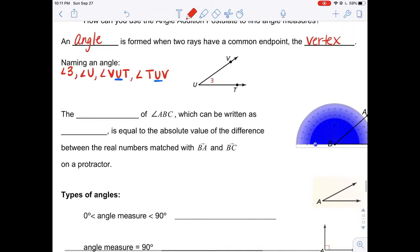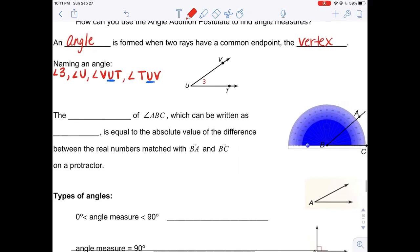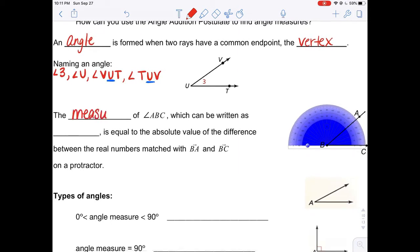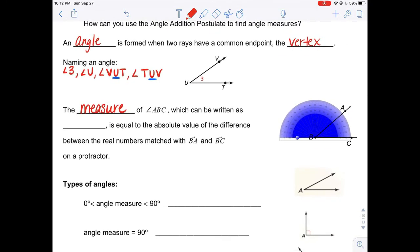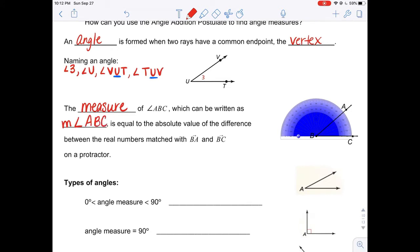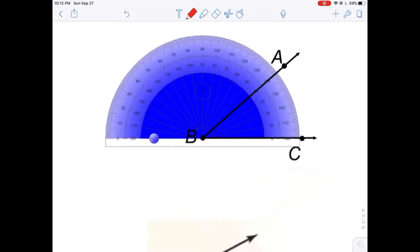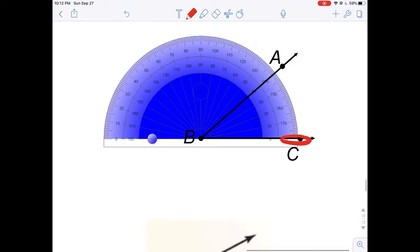We can find the measure of angles. Here you see a picture of our protractor. We can find the measure of angle ABC, which can be written as: when we want to find the measure of an angle, the measure of the angle—in this example it's ABC—is equal to the absolute value of the difference between the real numbers matched with ray BA and ray BC on a protractor. So what that means is we take the numbered value on the protractor, both of them, and we subtract them inside the absolute value bars. And that number is our angle measure.